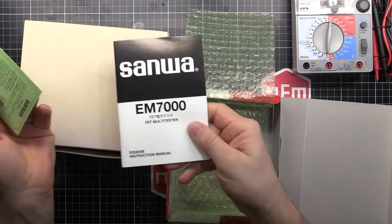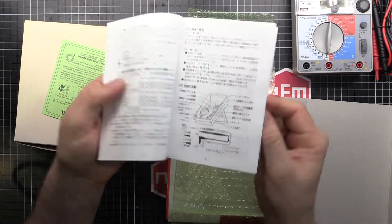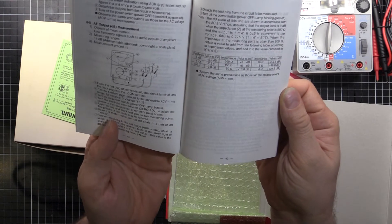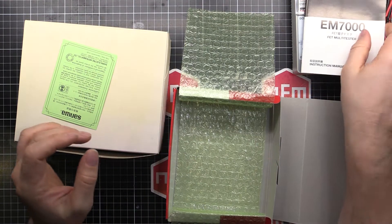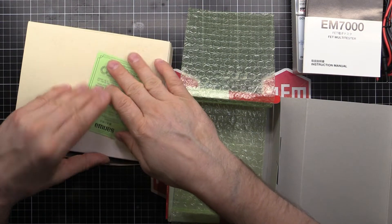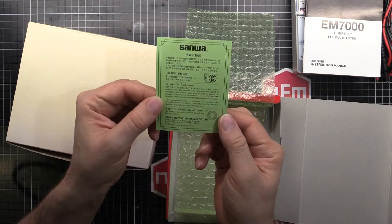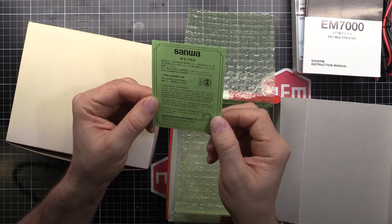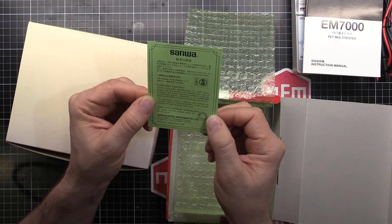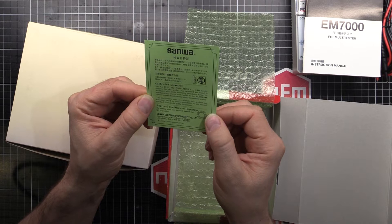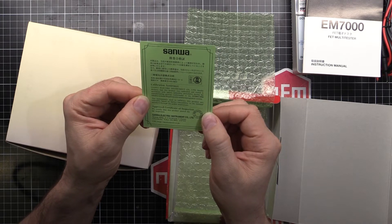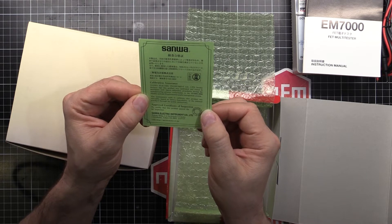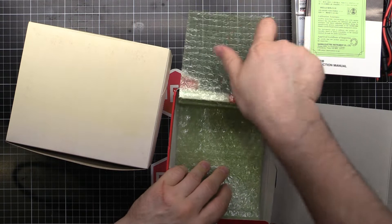Comes with a manual, which is in Japanese, of course, because it's a Japanese made product. And also in English. And it seems to be quite good English too. Not the usual English you get with Asian made stuff. And a calibration assurance certificate saying it was calibrated and tested in accordance with the Sanwa calibration procedures during the manufacturing process conformable to the ISO 9001-2000 Quality Management System. So it's been calibrated.